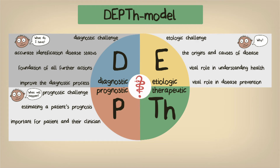From the clinician's perspective, information about the prognosis of a patient is essential as it's used to make decisions about treatments or preventative interventions. Prognostic research will help clinicians to accurately assess a patient's prognosis, essentially by answering the question: what's the patient's prognosis if no therapy is initiated?